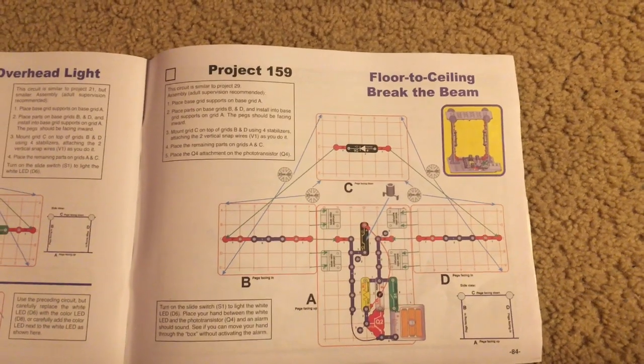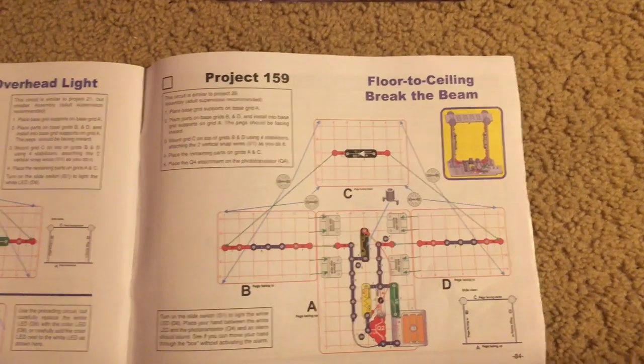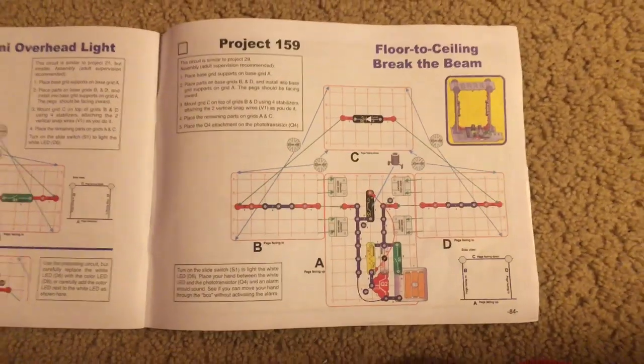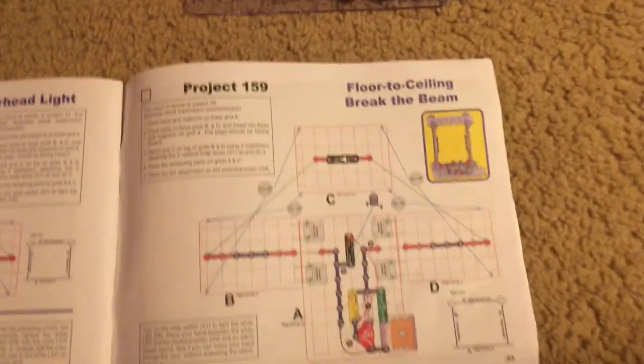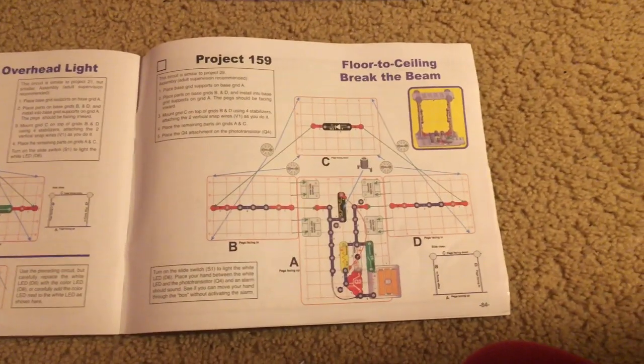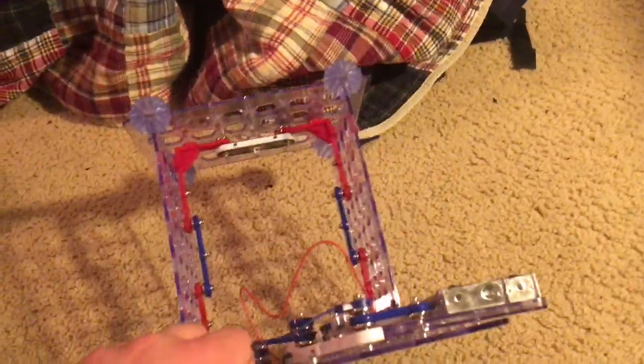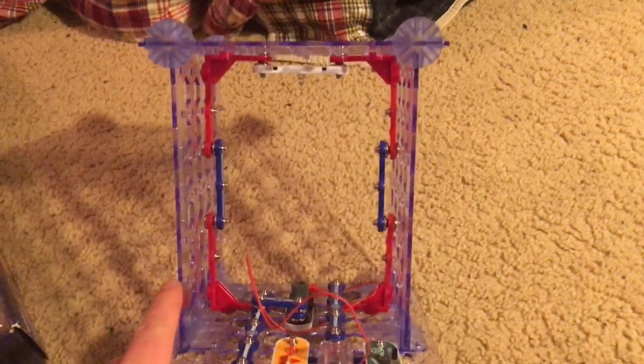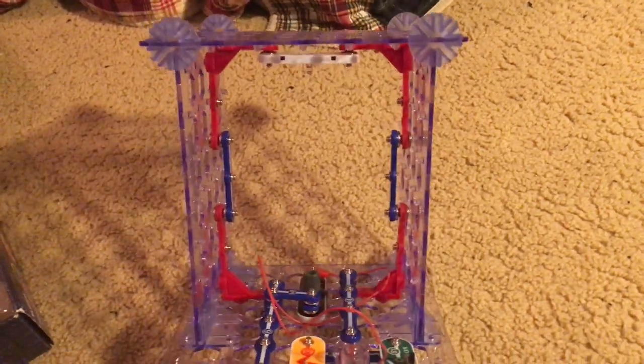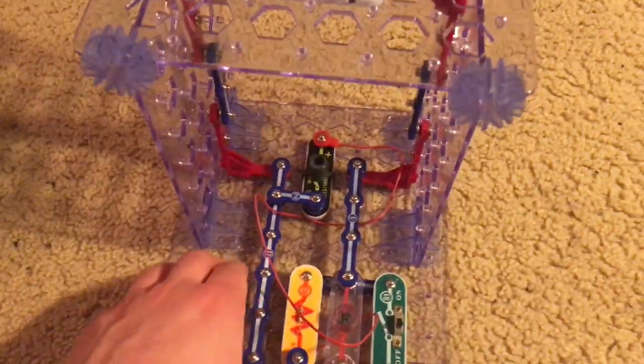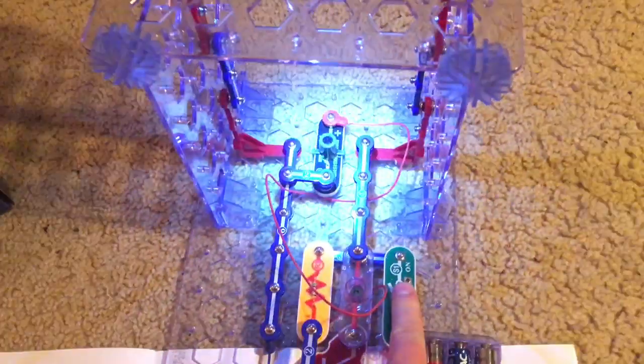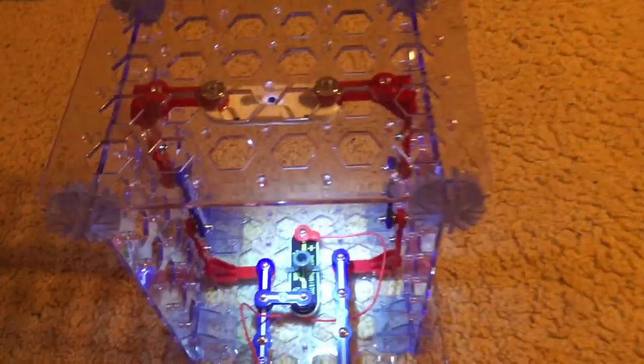Project 159, floor to ceiling, break the beam. This is the last main project for Snap Circuits 3D Illumination. We will use this circuit which consists of a box formed by three of the base grids attached to the main one. We'll turn on the slide switch and the white LED in an inverted position shines right over the photo transistor creating a beam.